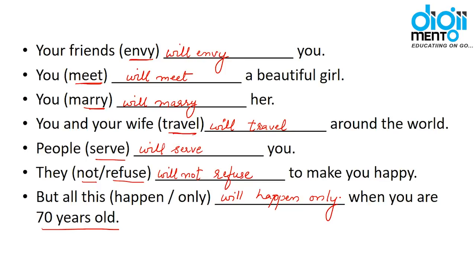Just imagine — someone tells you at age 20 that you'll have money, cars, a bungalow, a beautiful wife — but all of this only when you are 80 years old! You have to wonder whether you'll even be in a condition to enjoy all those things at that age. It's actually really funny!